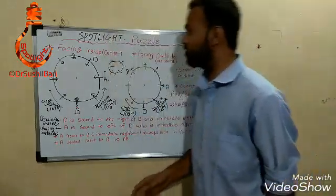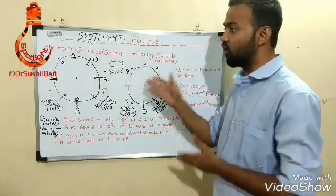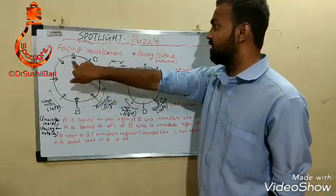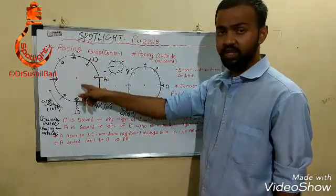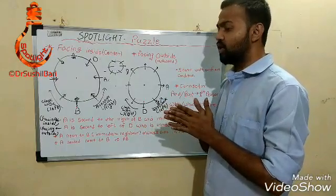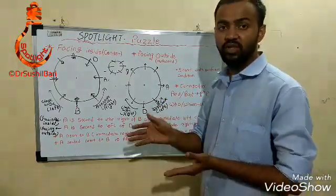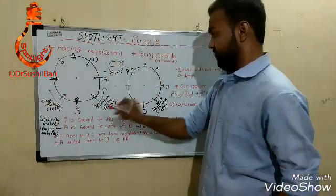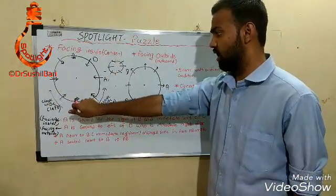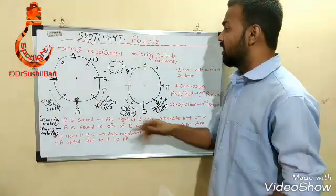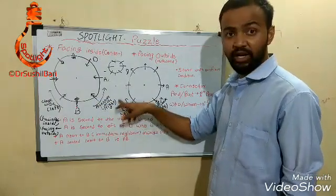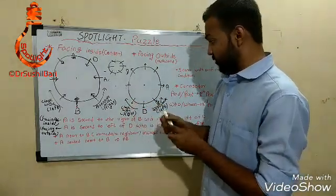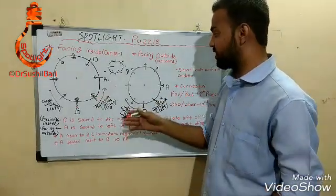The next key concept in circular arrangement is facing inside and facing outside. First, we'll talk about facing inside. Many students don't know the directions — what is left and what is right — and are always confused. If the person is facing inside, your right will be the anti-clockwise direction and the left will be the clockwise direction. Remember this.